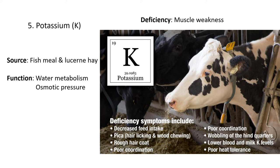The main deficiency is muscle weakness. Potassium, along with sodium, is needed for the movement and functioning of muscles. If there's no potassium, the animal usually feels fatigued and physically can't move their muscles. They also have poor coordination and wobbly legs, low blood pressure, and pica can also occur if they don't have enough potassium — they start eating bones and strange things. They also usually have a lack of appetite.